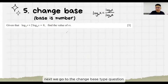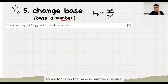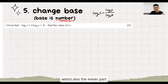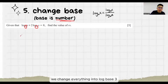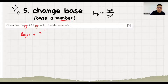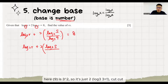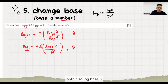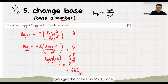Next, we go and see some change base type questions. We have two types: base is unknown, and base is a number. We focus on the base is a number question, which is the easier part. Here we have log base 3 and log base 9. When you have different bases, we usually change them to the smaller number. We change everything into log base 3. We change to log base 3: S goes up, 9 goes down. Here 9 is 3 power 2, so it's just 2. Cut, cut. Both are now log base 3, so we can join them together. Plus joins them as times. Our S is 3 to the power 8. In the calculator, you get the answer 6561.